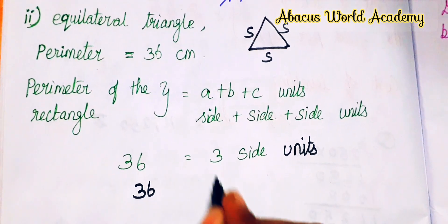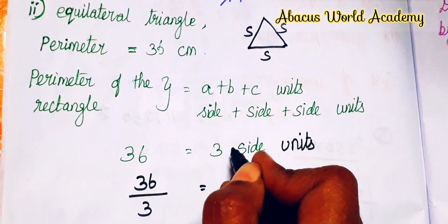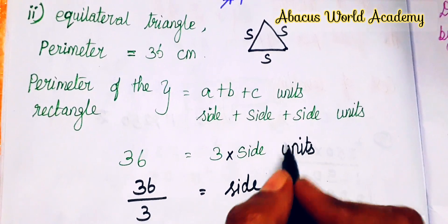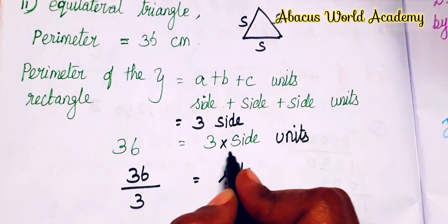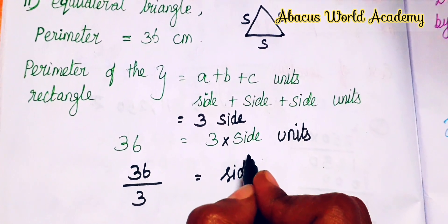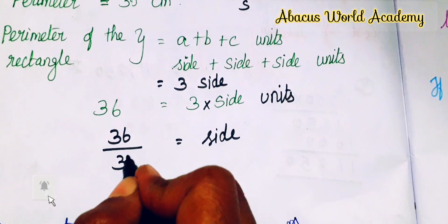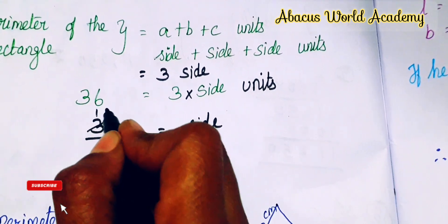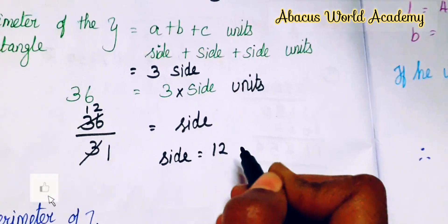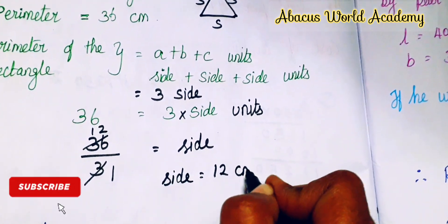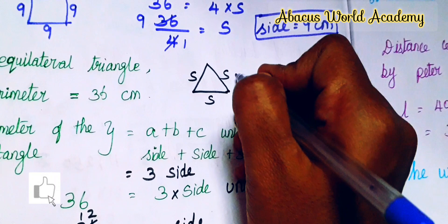Total length is 36 cm. Perimeter is 36. So, 36 divided by 3 gives the side. 3 into 12 is 36. So side is equal to 12 cm. Each side of the equilateral triangle is 12 cm.